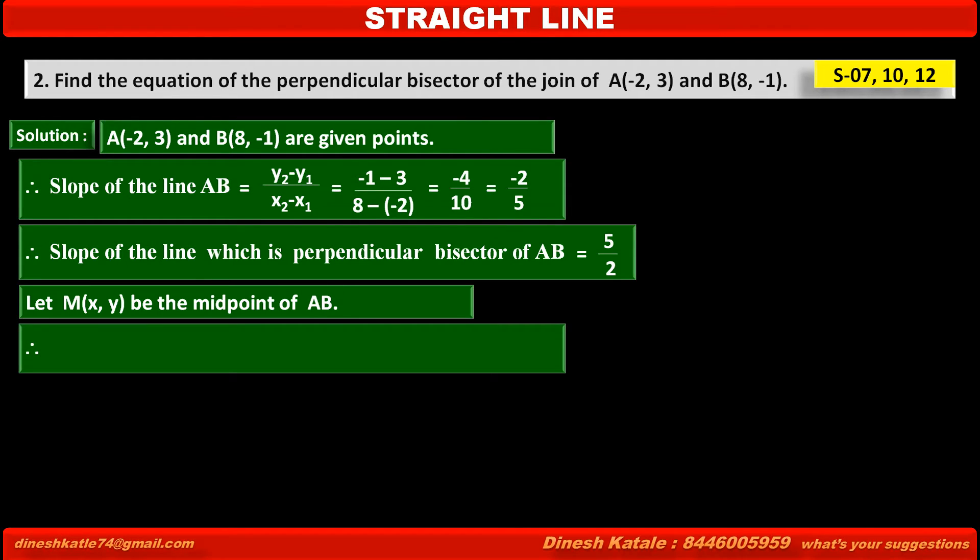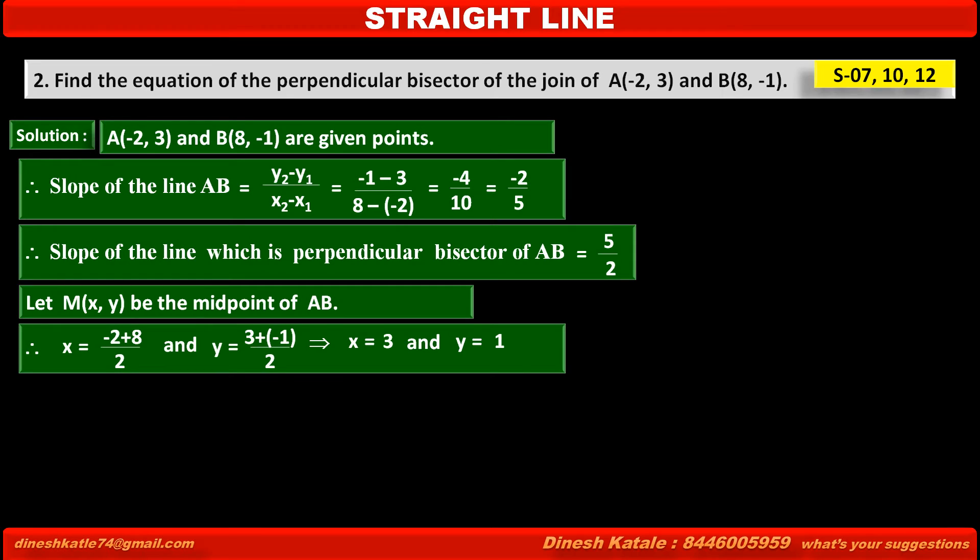Therefore, by midpoint formula, x is equal to -2 plus 8 upon 2, which implies x is equal to 6 upon 2, that is 3. And y is equal to 3 minus 1, that is 2 upon 2, that is 1.